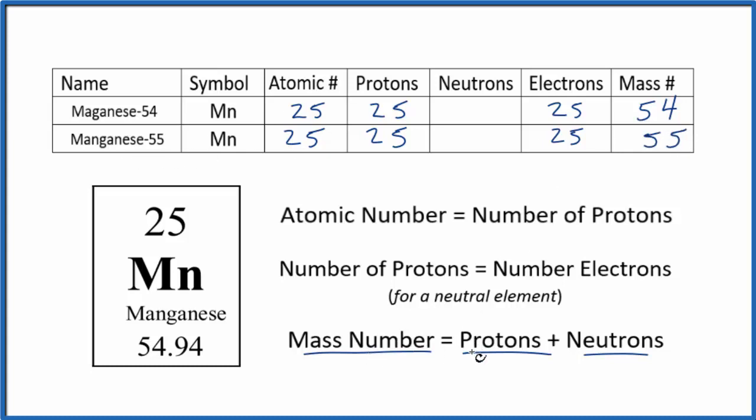Since mass number equals protons plus neutrons, we know 25 plus some number equals 54. 25 plus 29 equals 54. And here, 25 plus 30 equals 55. So we've figured the neutrons out, since we knew the mass number and the number of protons.